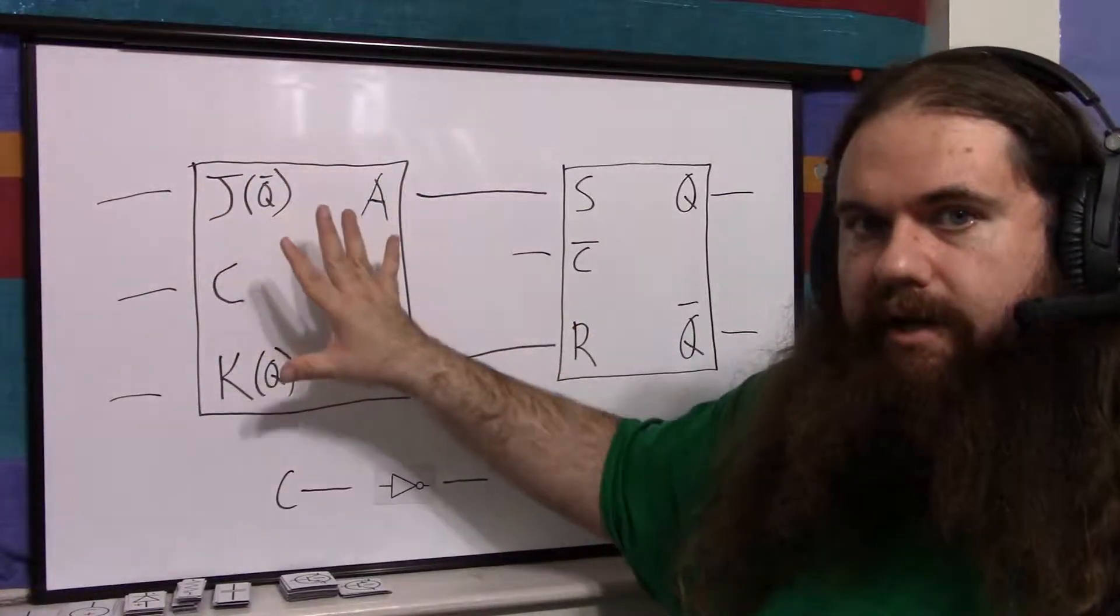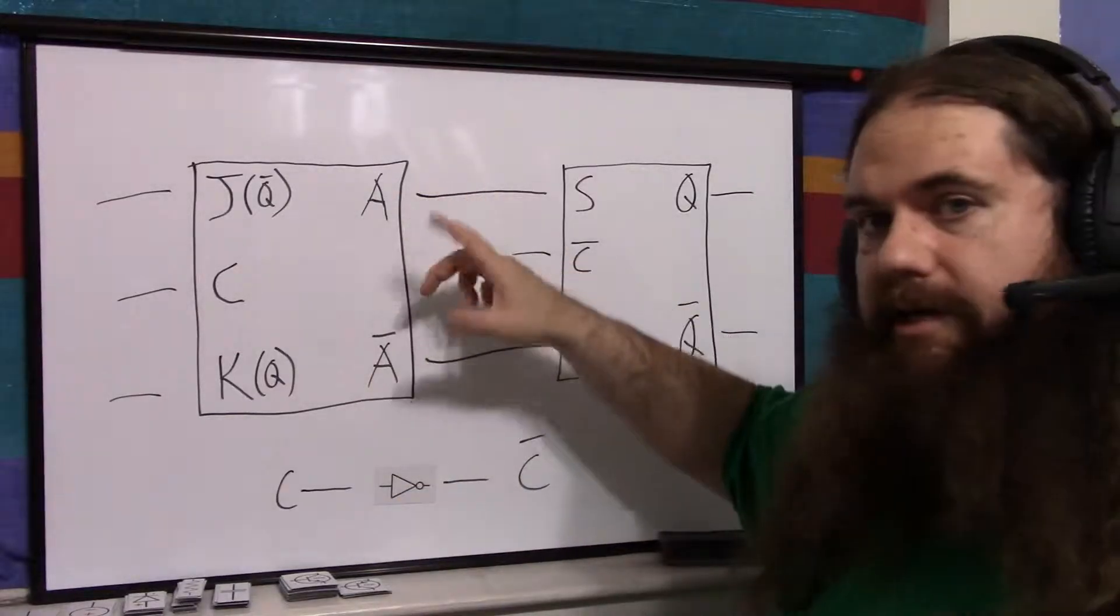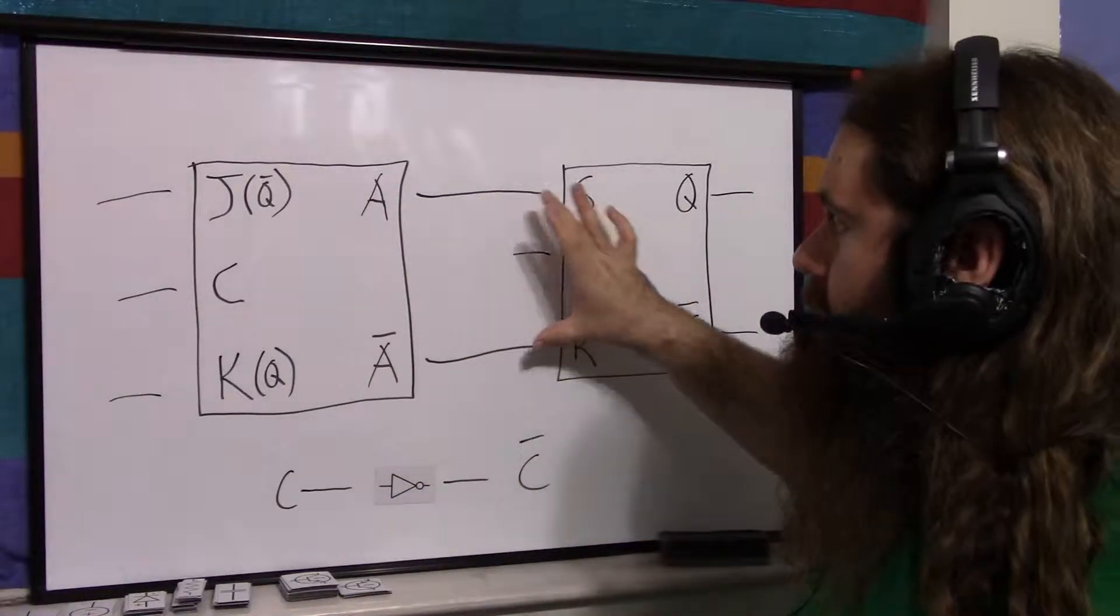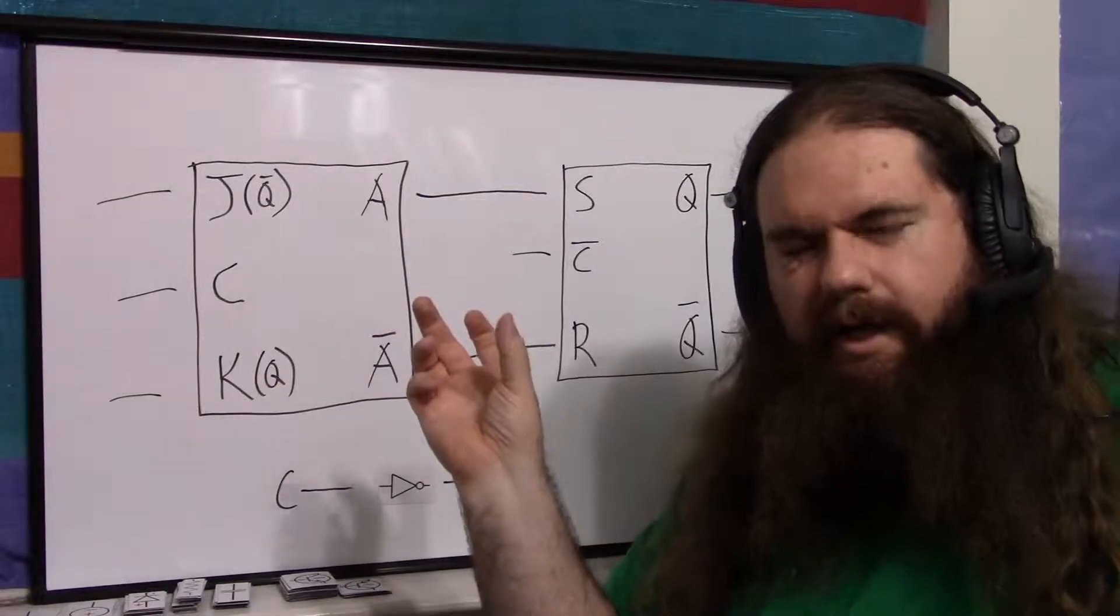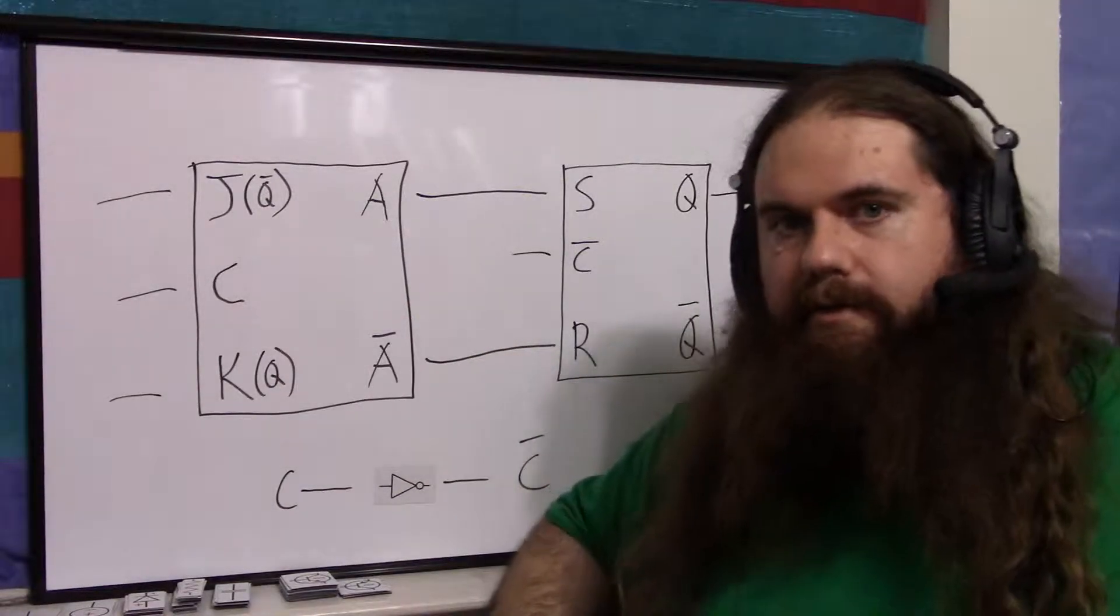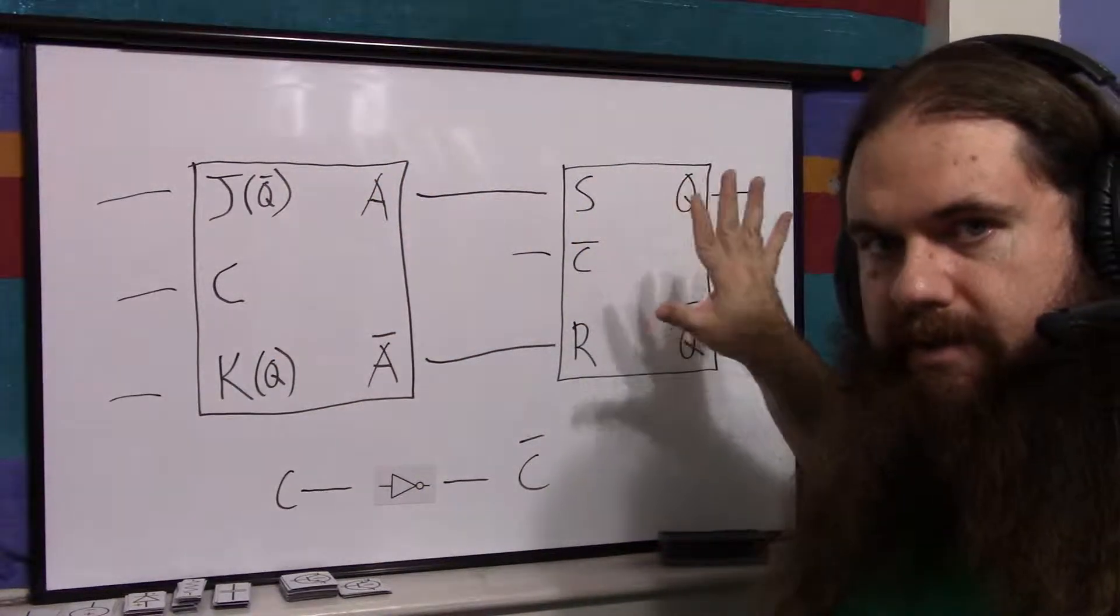So this one is going to change when the clock is high, but this one's got a low clock. So while it's changing, this one is chilling, and it's ignoring everything this one is saying. Then, once it's settled, and you time your clock to make sure it has time to settle, the clock goes low, which means this clock goes high, so this flip-flop turns off, and this one turns on.